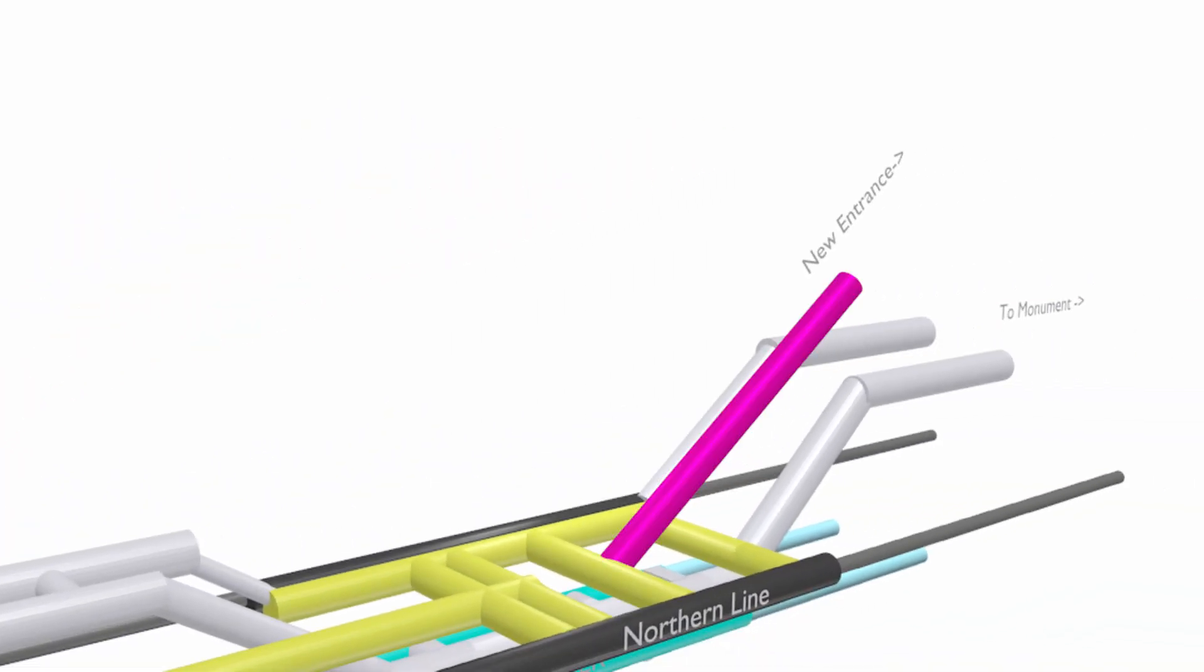And then finally, they're also putting in this new set of escalators here that are going up to the new station entrance on Cannon Street, which is replacing a McDonald's that used to be there. That new entrance is going to be much more convenient for passengers coming off national rail services at Cannon Street.